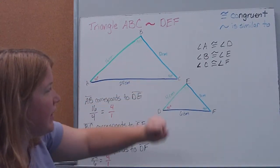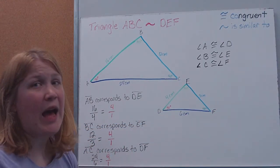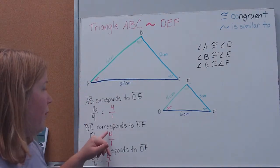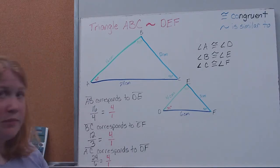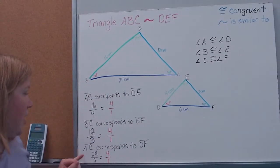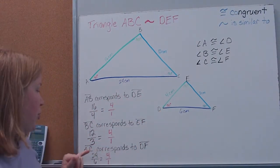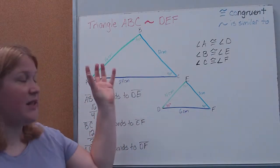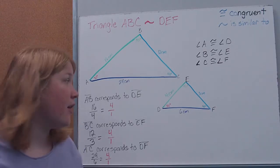Side BC, color-coded in blue, corresponds to side DF. They're in the same spot on the triangle, so they're proportional. Writing it the same way: 12 over 3 also reduces to 4 over 1. And finally, AC corresponds to DF — also in the same spot. Written as a proportion, 24 over 6 simplifies to 4 to 1. So all of these sides have the same proportion — a scale of 4 to 1. Similar figures are just a scaled-down version of one another.